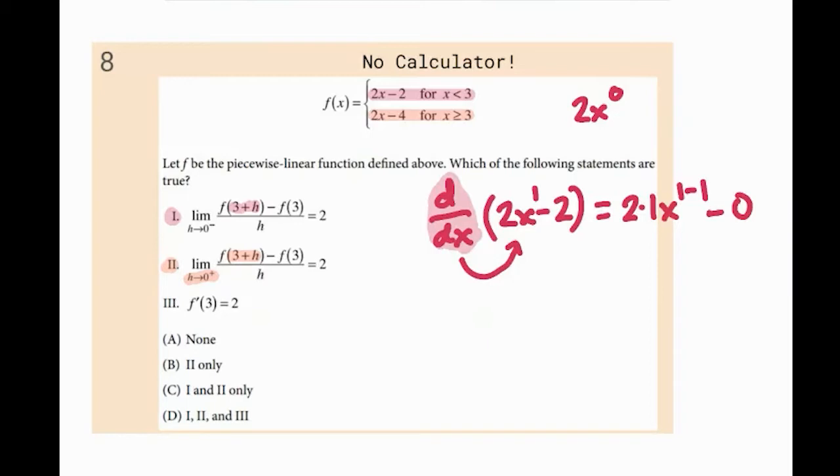And the derivative is the instantaneous rate of change, the change at a point. There is no change because it's always negative two. So the change for this is zero. That's why I put a zero in there. If you wanted, you can still use power rule on it. You bring the zero down, so it's zero times two times x times zero minus one. Zero times anything is zero, so it's just going to be a zero there.